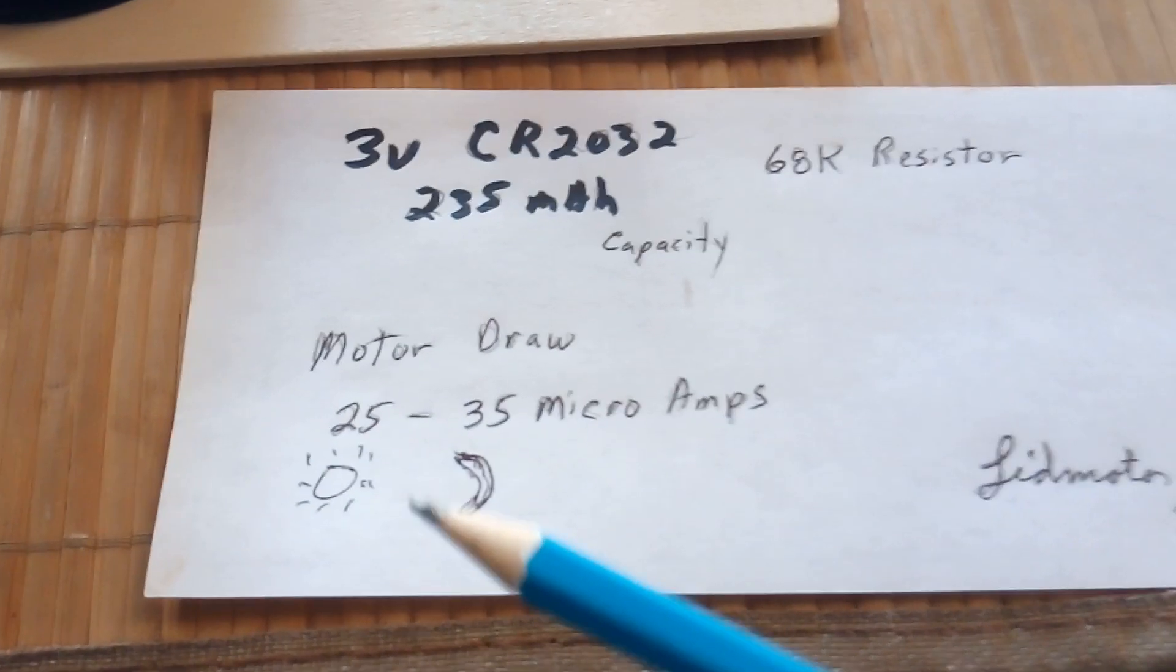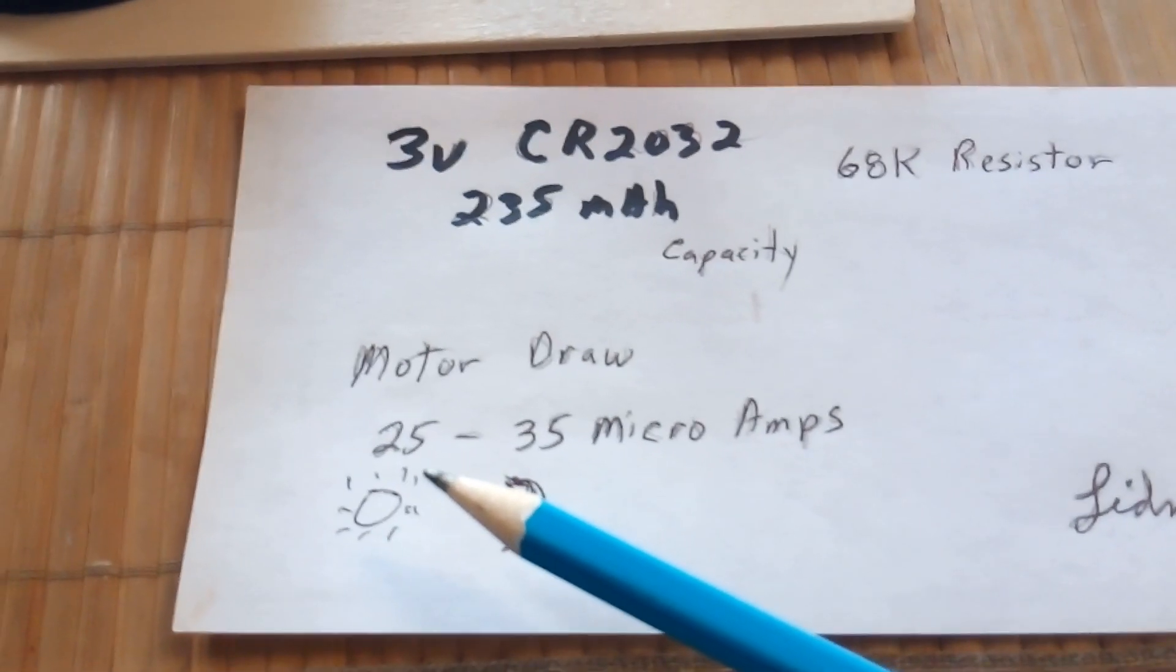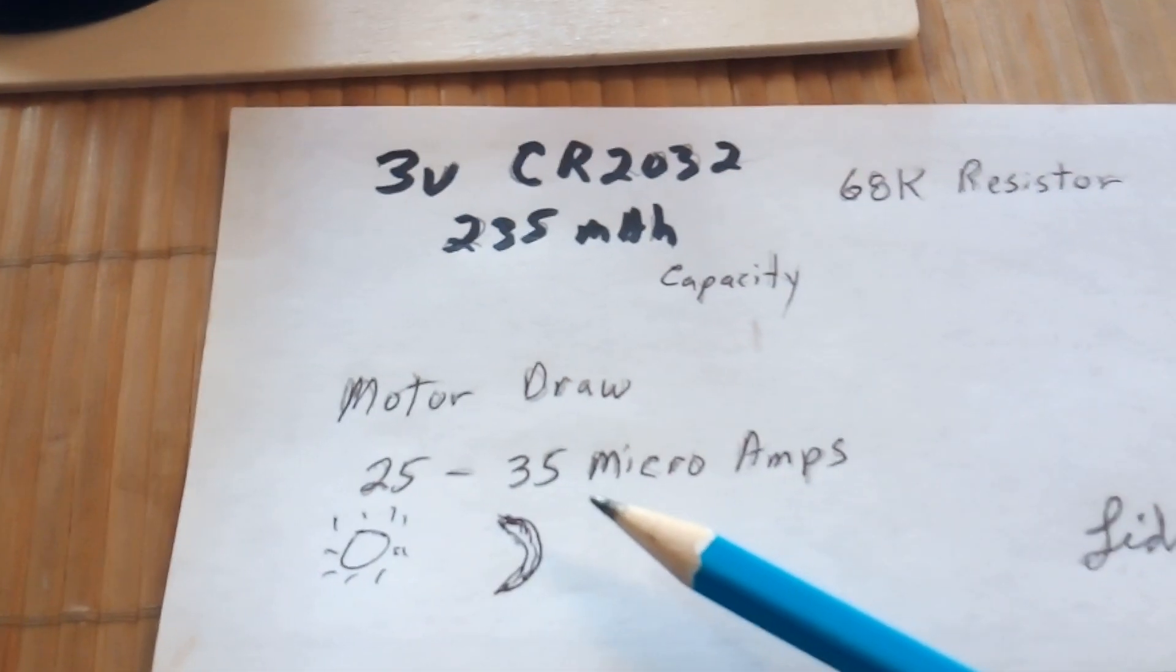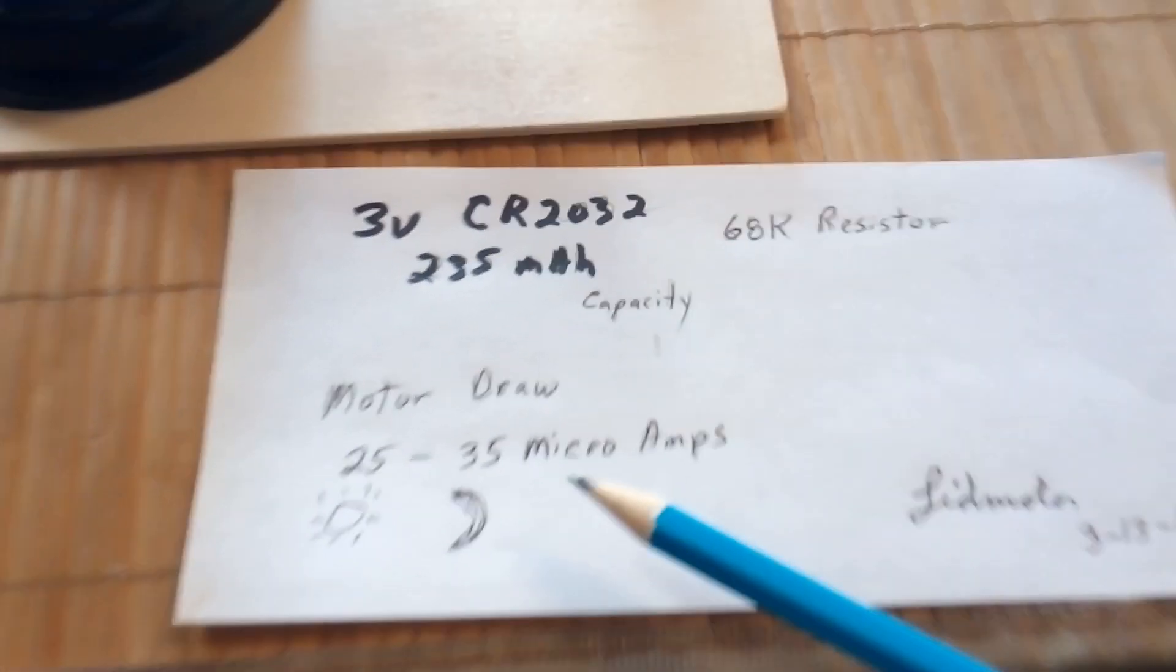The amp draw on this is about 25 microamps in daylight and then 35 microamps in complete darkness.